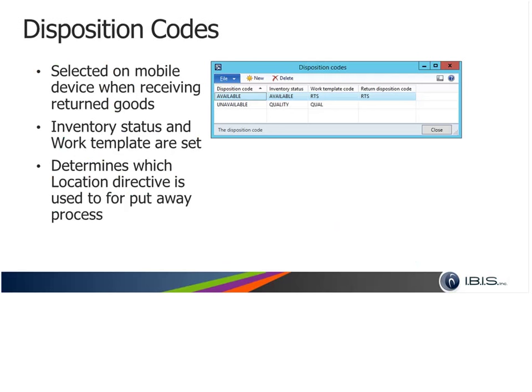Disposition codes are a collection of rules used when damaged items are received. When a worker uses a mobile device to receive damaged items, they must scan or enter a disposition code. Microsoft Dynamics AX uses the disposition code to assign an inventory status to the product and generate a work template. AX then searches for a location directive with the same disposition code to determine where to put away the returned items. For example, a 'quality' disposition code could trigger work to pick the item from the receiving dock and put it in the quality area for deeper inspection.